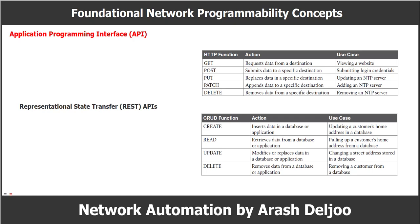REST uses different HTTP functions to interact with data. The most common HTTP functions are: GET — request data from a destination, for example viewing a website; POST — submit data to a specific destination, such as submitting login credentials; PUT — replace data at a specific destination, such as updating an NTP server; PATCH — append data to a specific destination, such as adding an NTP server; and DELETE — remove data from a specific destination, such as removing an NTP server.